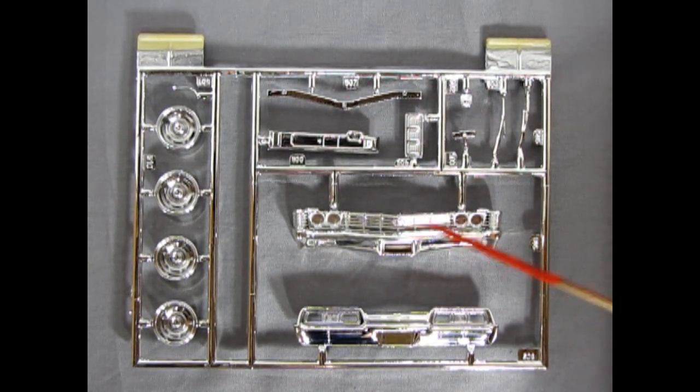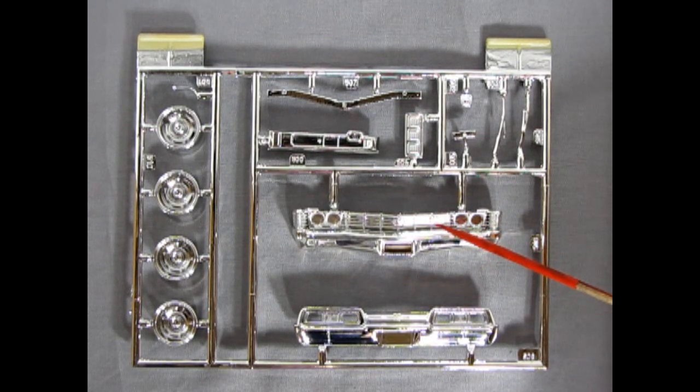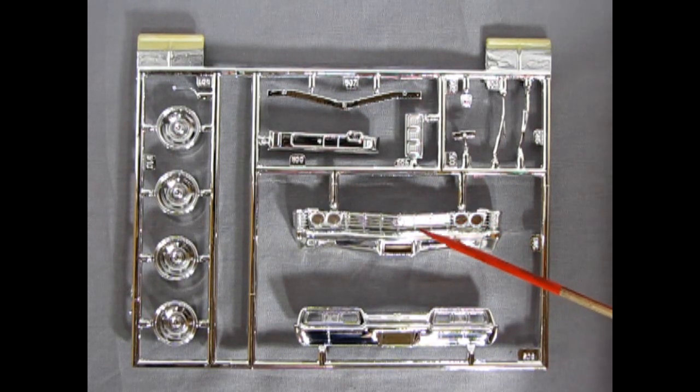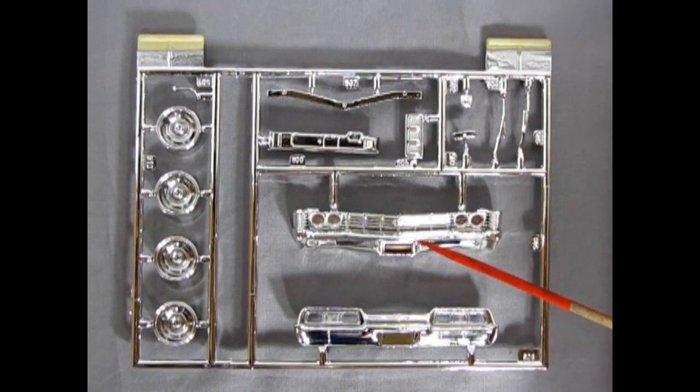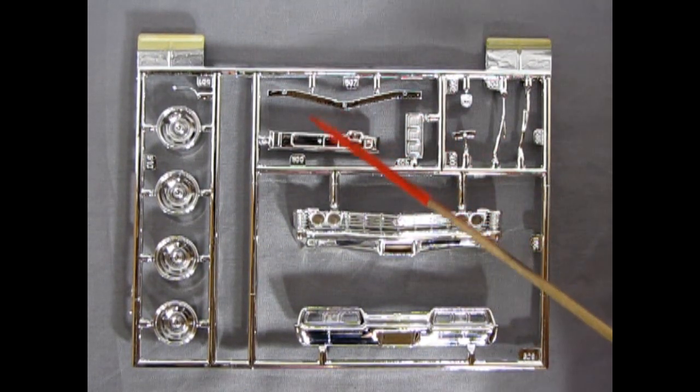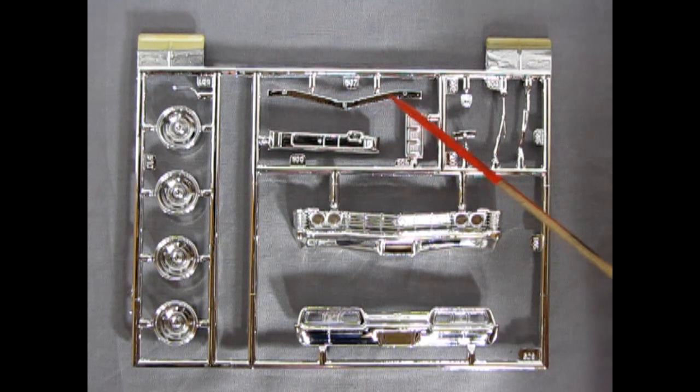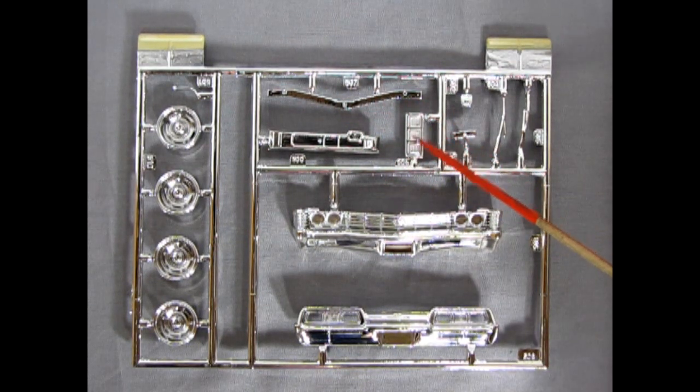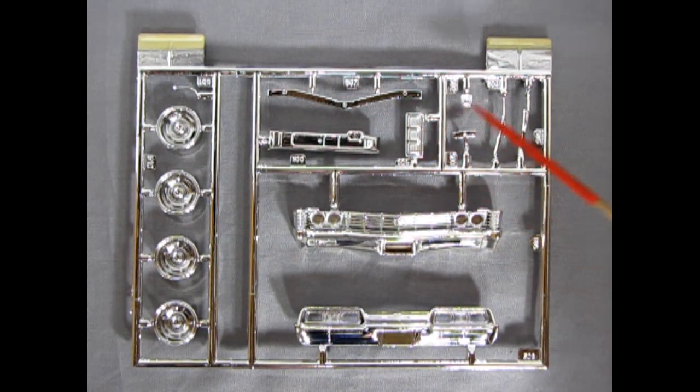And this, of course, would go good with your Nuln Oil or Flat Black Wash. There's the console, all in chrome. The little bit of trim that goes underneath the hood. And, of course, there's the insert for that hood.